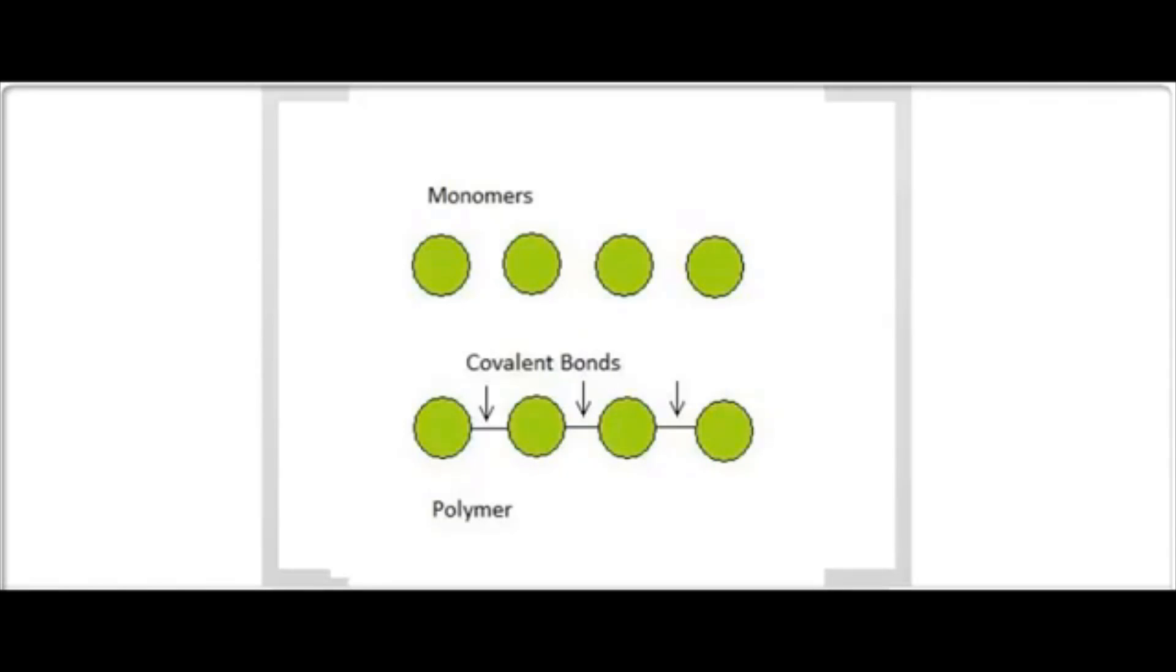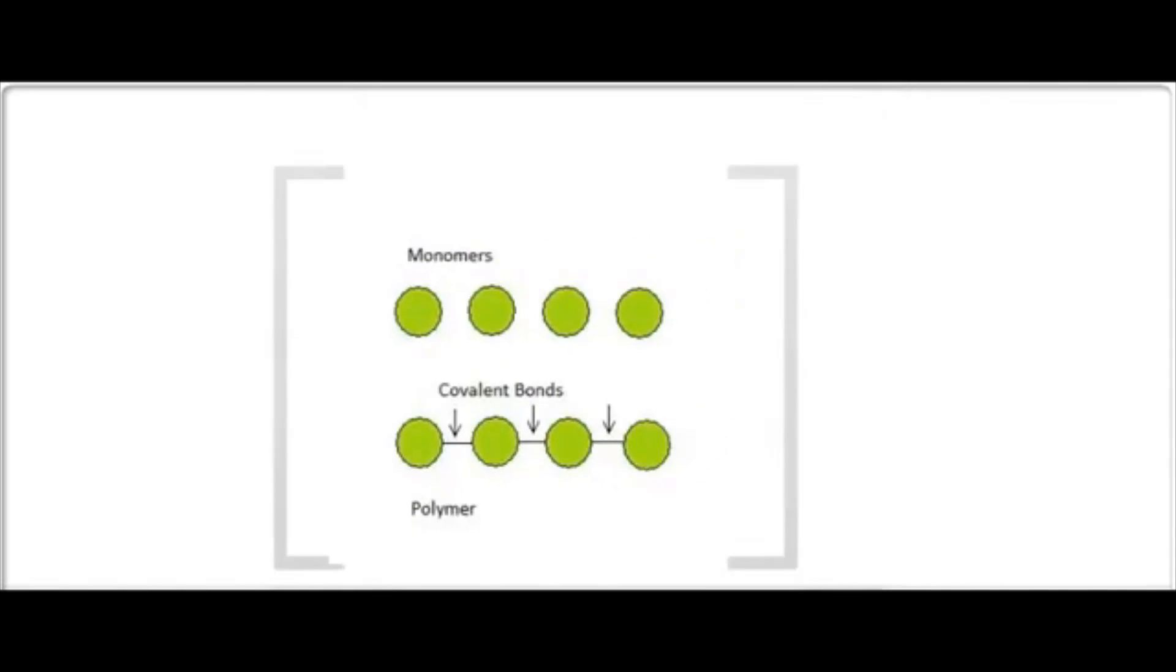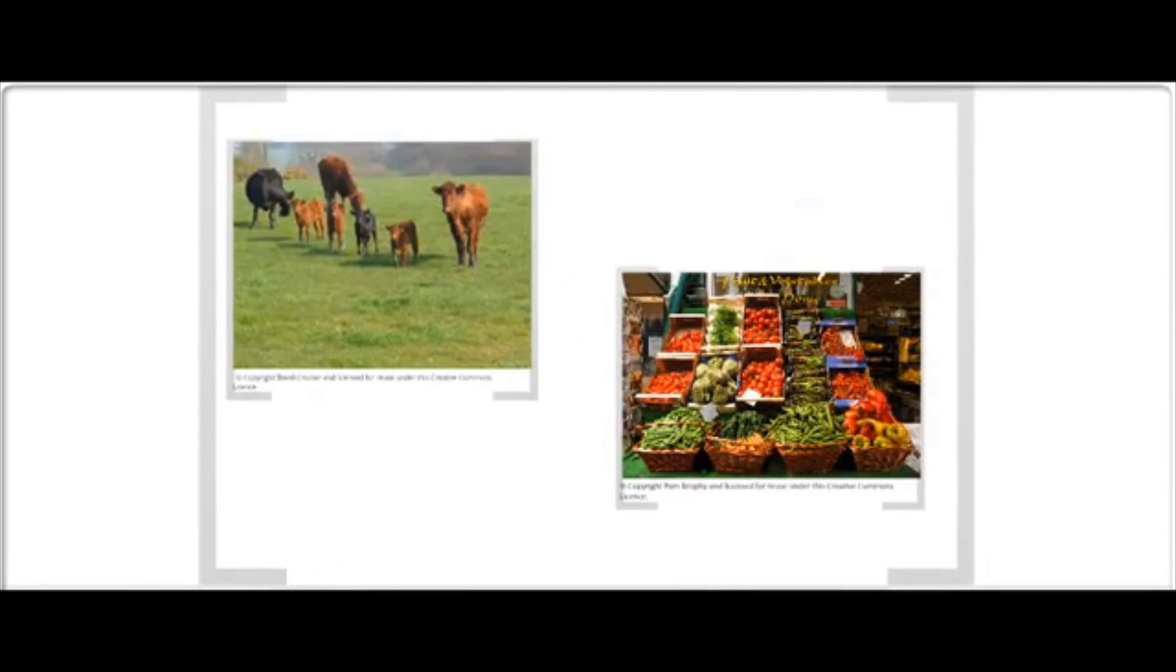I said that these are organic molecules. When we hear the word organic in relation to produce or livestock, we think of things that have been grown naturally, without artificial pesticides or hormones. But that is not the way we use this term in biochemistry.